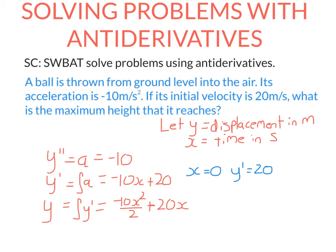So making this a little easier to understand, the displacement is minus 5x squared plus 20x, because minus 10 divided by 2 is just minus 5.